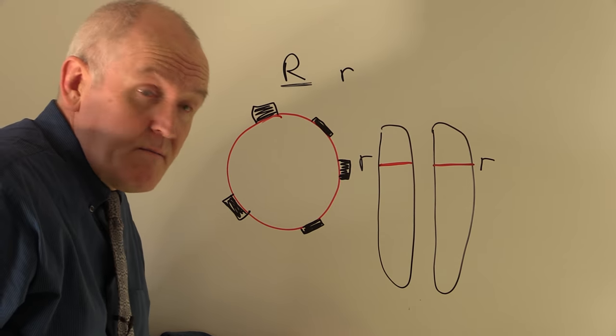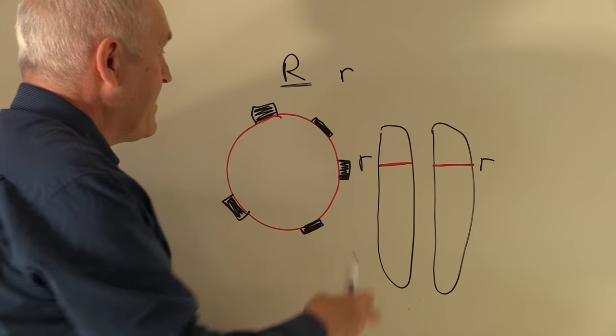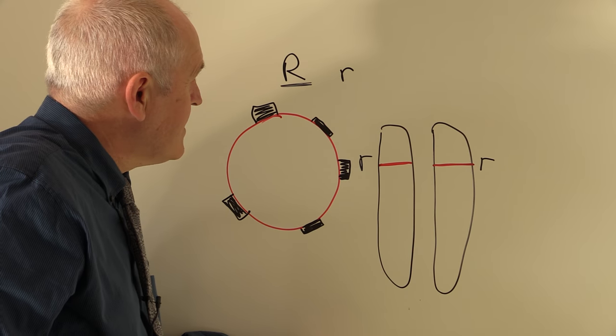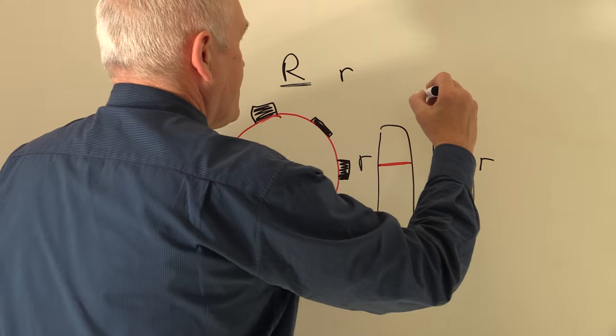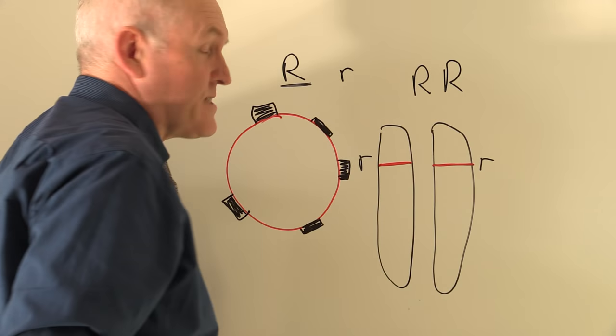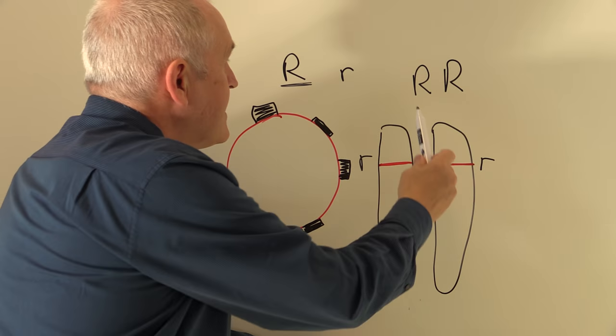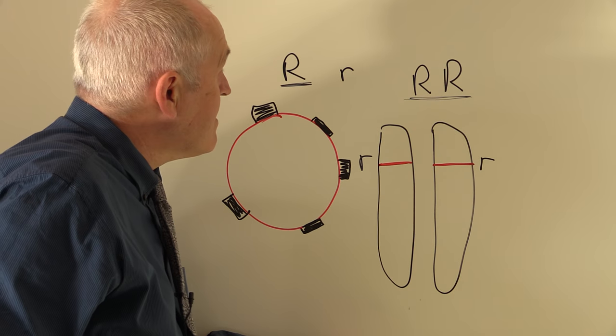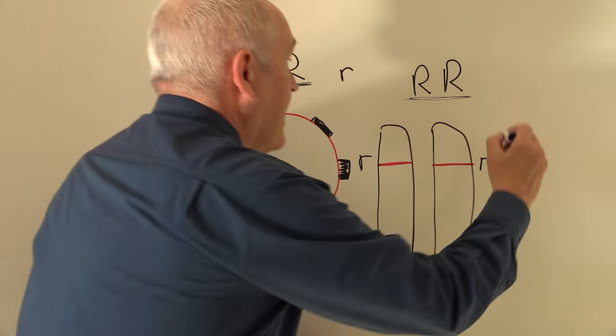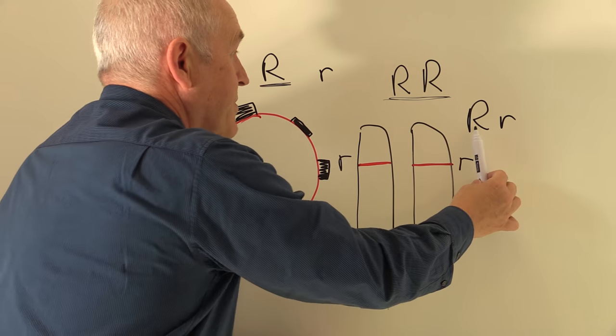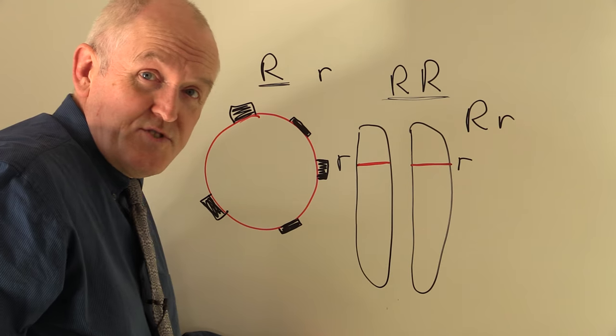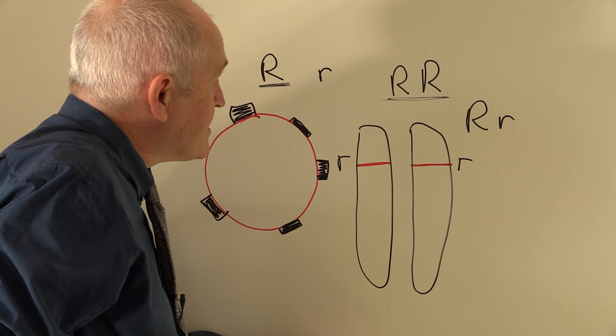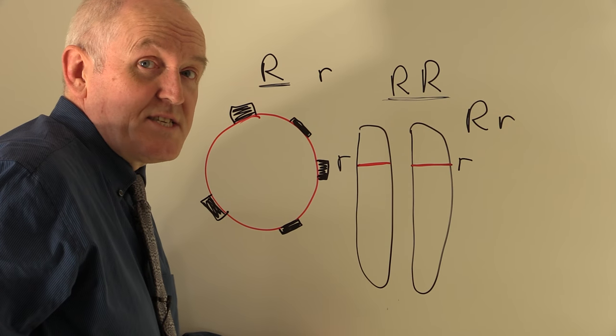But if someone is Rhesus positive, then one or both of these genes may be dominant. So if someone was RR, they had two copies of the dominant gene, I think you can see that they would be Rhesus positive. But if someone was Rr with one dominant and one recessive gene, the gene for the production of the D Rhesus factor is dominant, so it would be expressed if present.